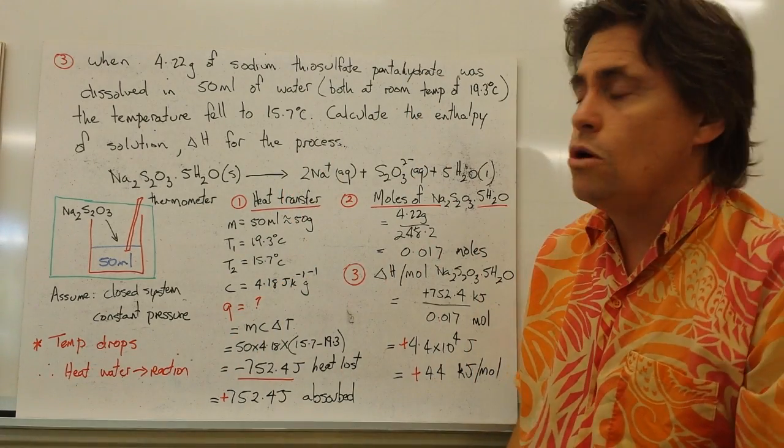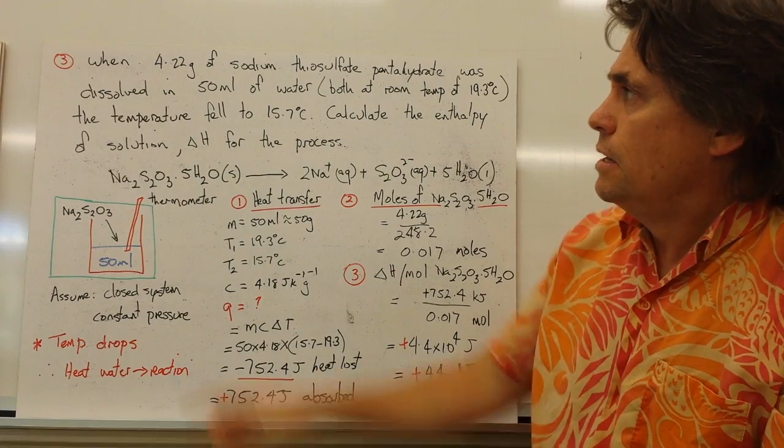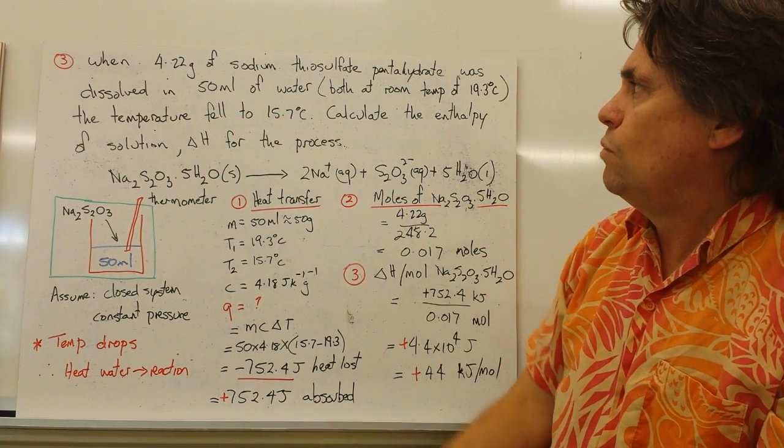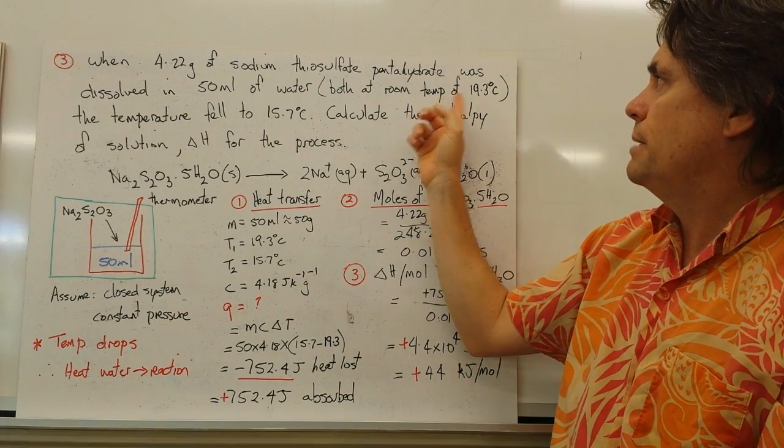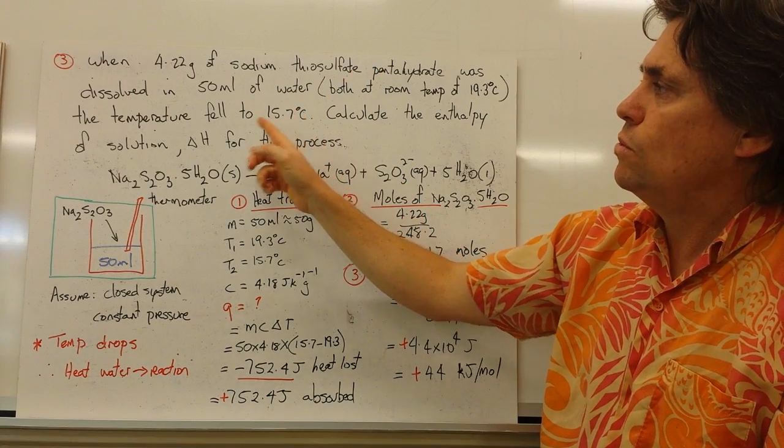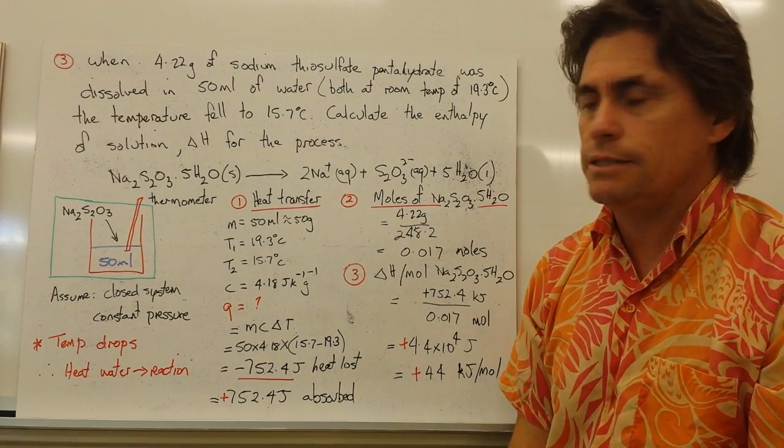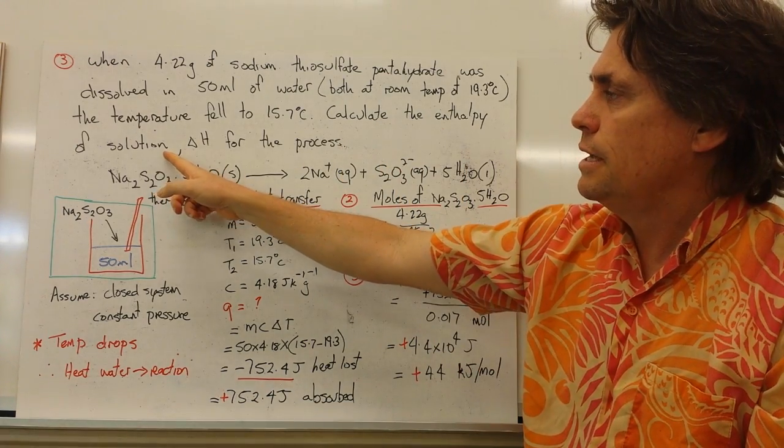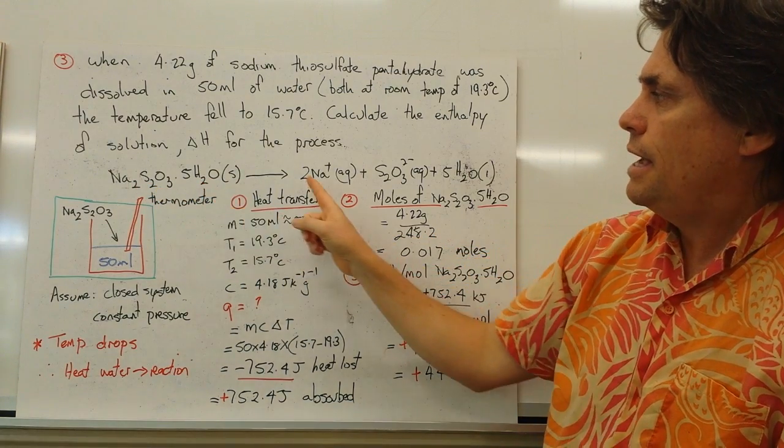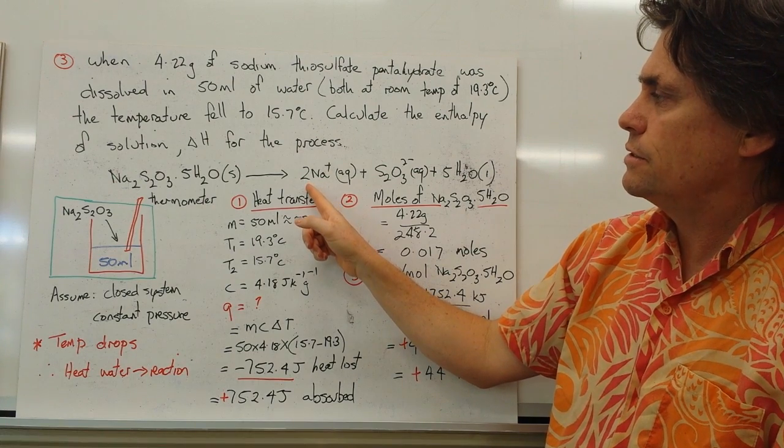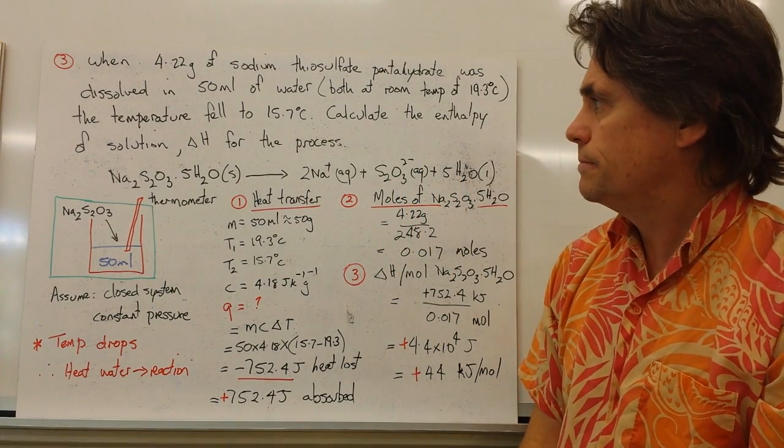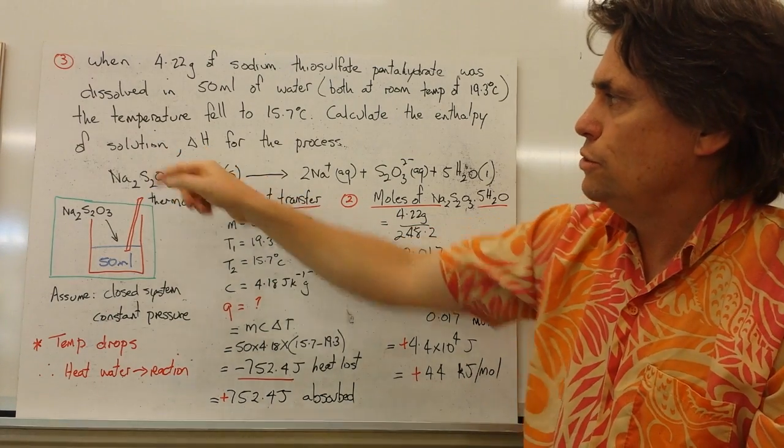Our third question is much more complex. It involves a few steps. We're told that we have 4.22 grams of sodium thiosulfate pentahydrate, and this was dissolved in 50 mils of water. Both were at room temperature of 19.3 degrees C. When the sodium thiosulfate pentahydrate was put into the water, the temperature fell to 15.7 degrees. We're asked to calculate the enthalpy of the solution. In other words, the process where we put our sodium thiosulfate pentahydrate into water, and it dissolves into its requisite ions. So our sodium ions, our thiosulfate ions, and our liberated water molecules. So we want to calculate the delta H for this dissolution process.